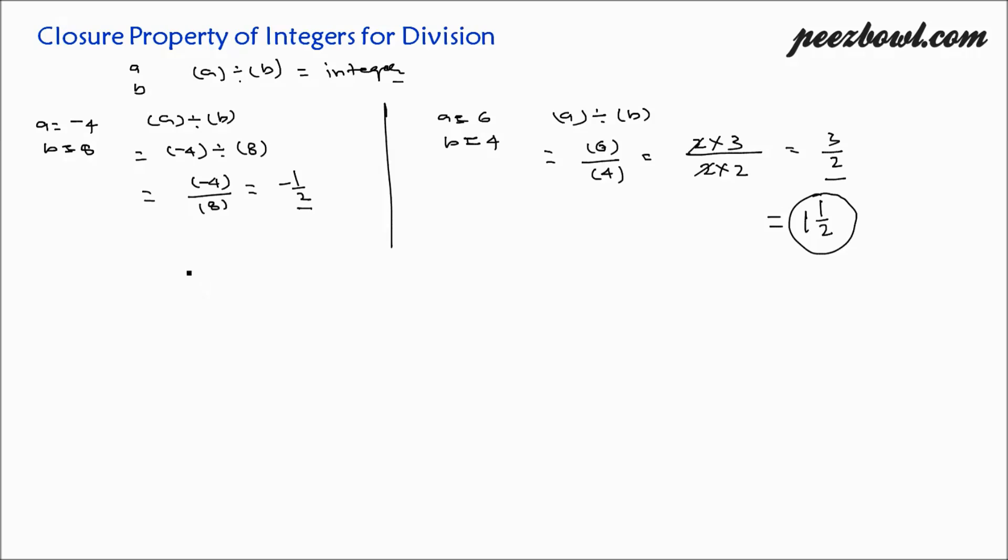In a few instances, we will find that closure property of integers for division is true. For example, if we put a as 4 and b as negative 2, we need to find a divided by b, which equals 4 divided by negative 2. This equals negative 2, which is an integer.